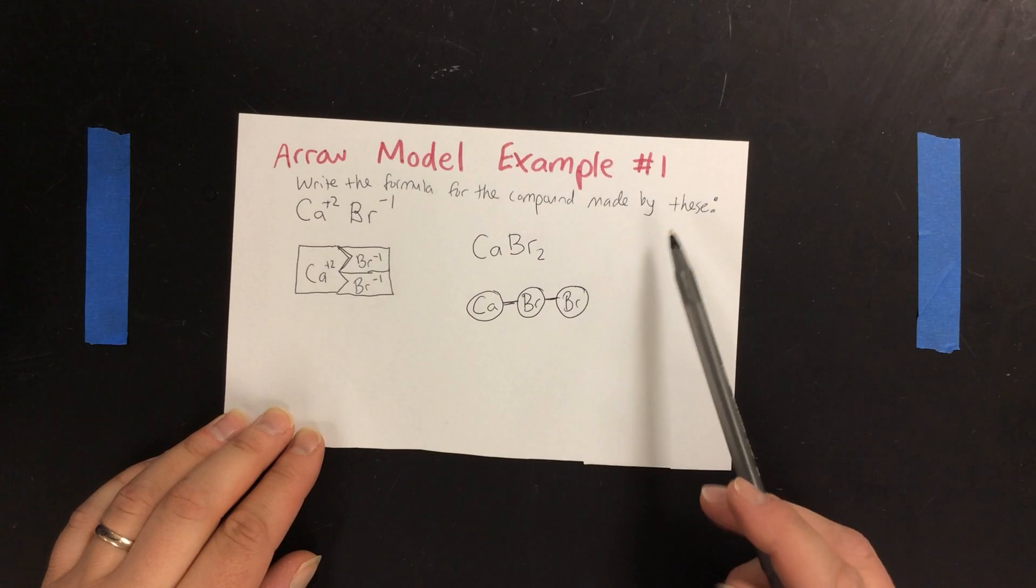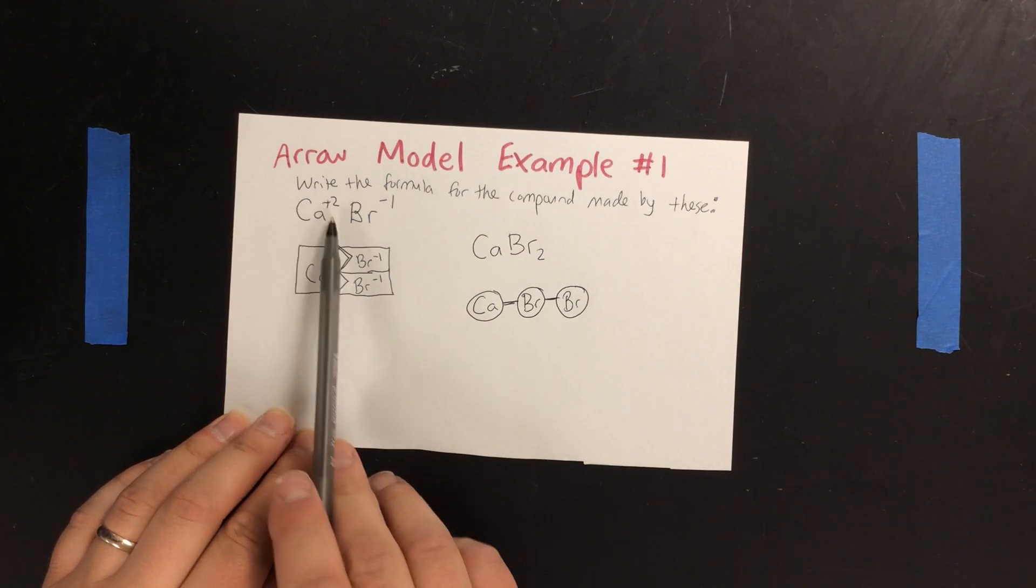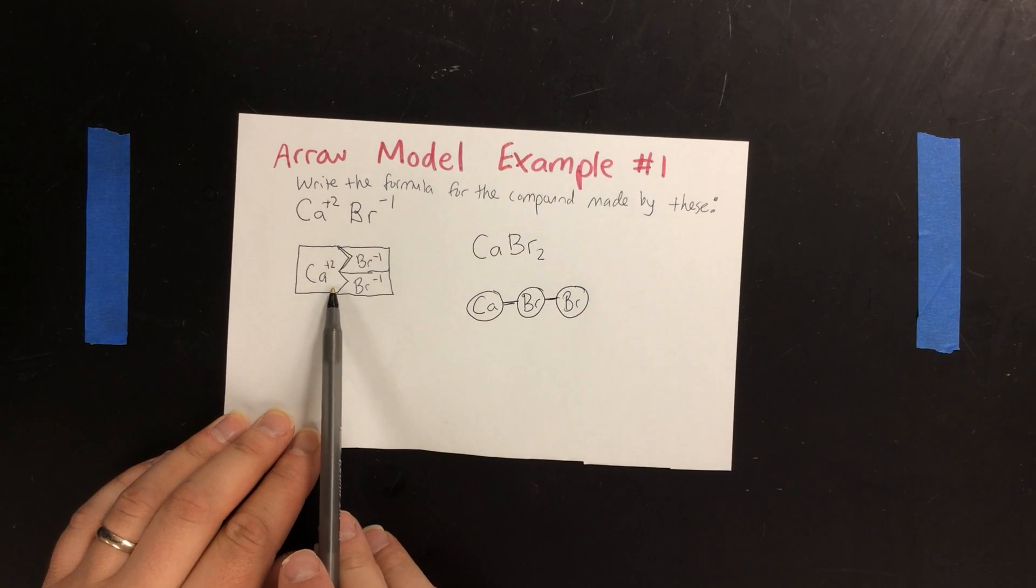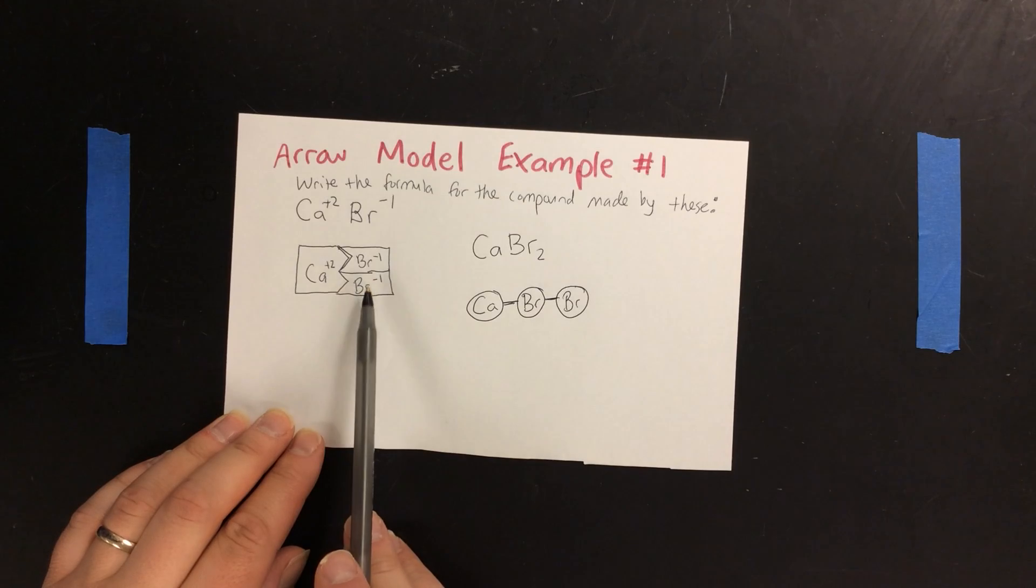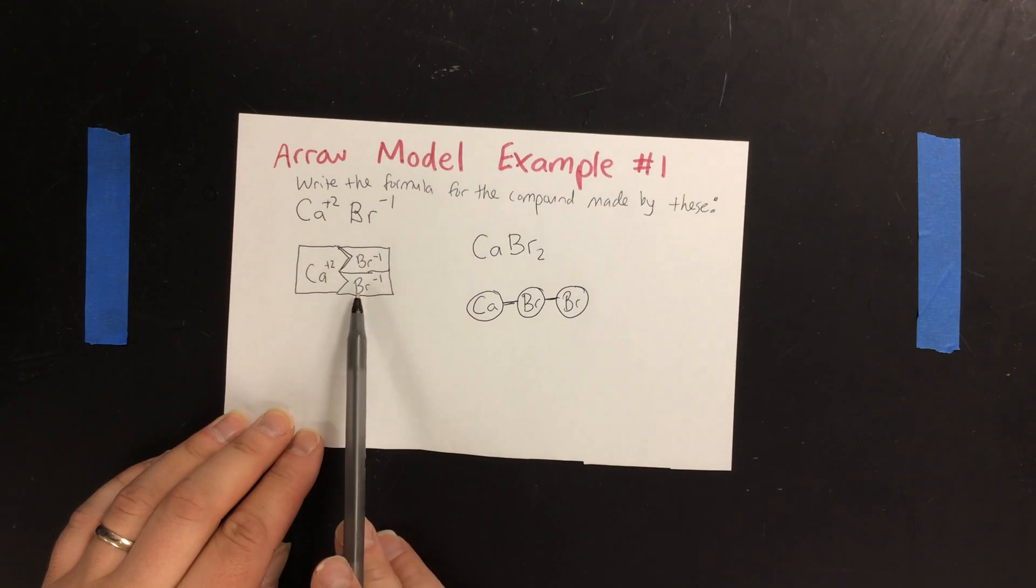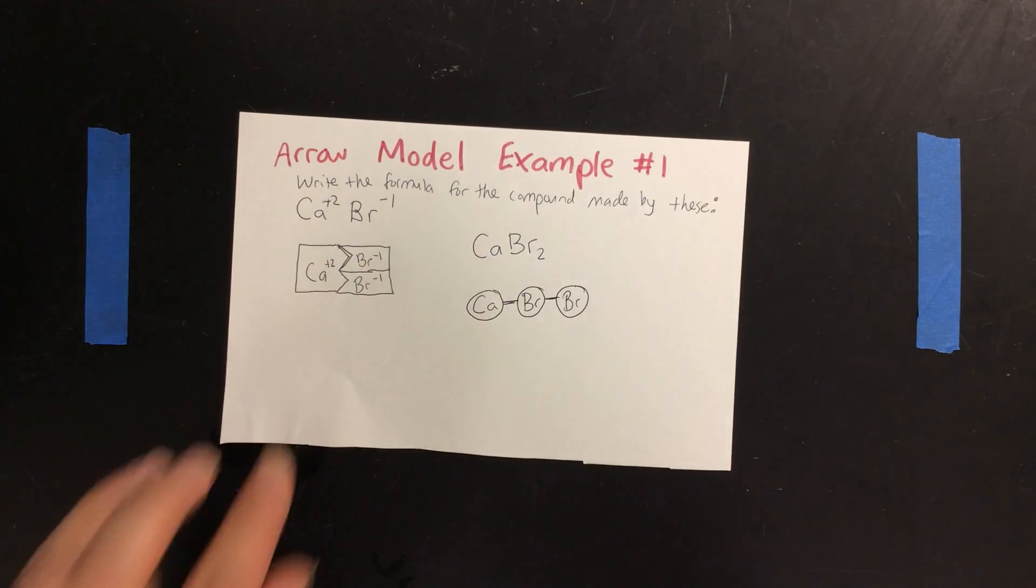To sum up, you need to find the oxidation numbers, then draw your puzzle pieces for the arrow model, then figure out how many of each go together to make a perfect rectangle. Then you count the atoms in your arrow model to figure out both the formula and the circle model.